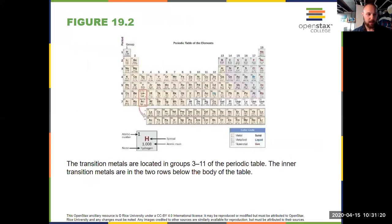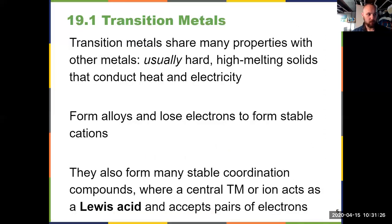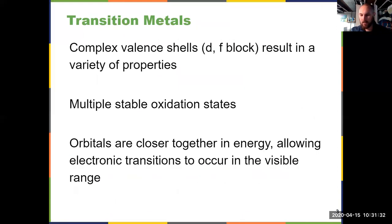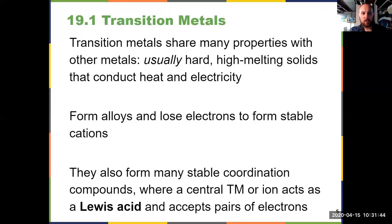You should know where they are on the periodic table — groups 3 to 11, and then the inner transition metals below. Jumping back to oxidation states: if you don't recall how to determine oxidation states from chapter 4 last semester, make sure you're familiar with that, because the oxidation state of a transition metal does correspond to its properties, and they can vary quite a bit.